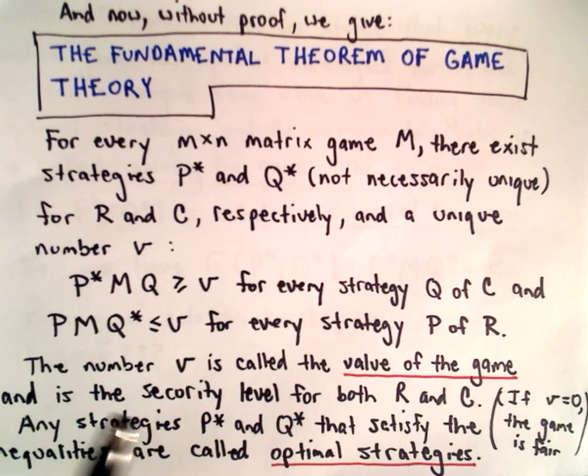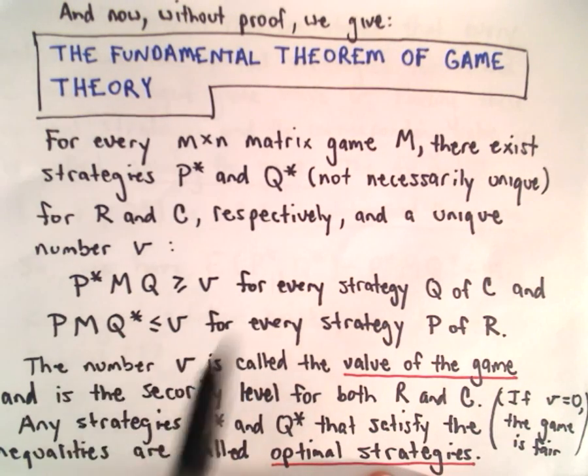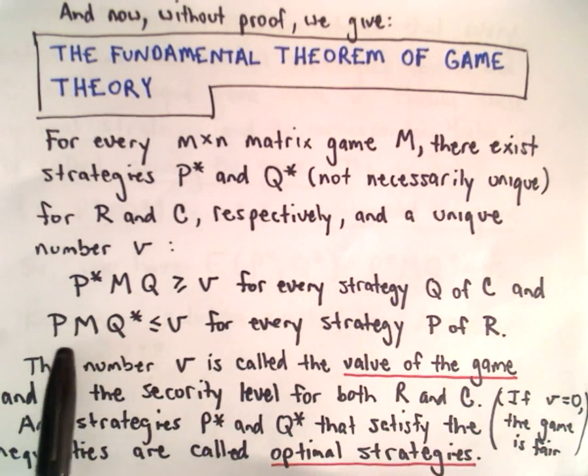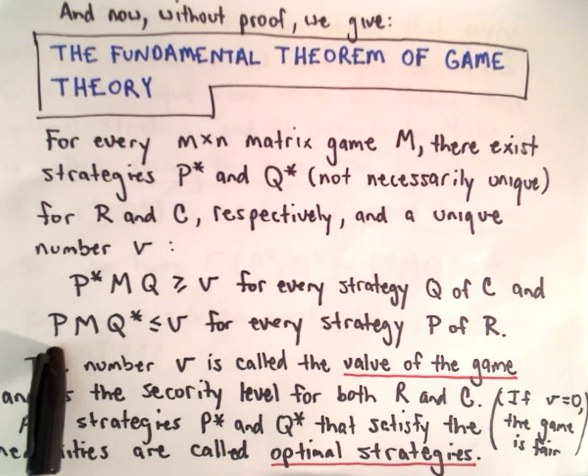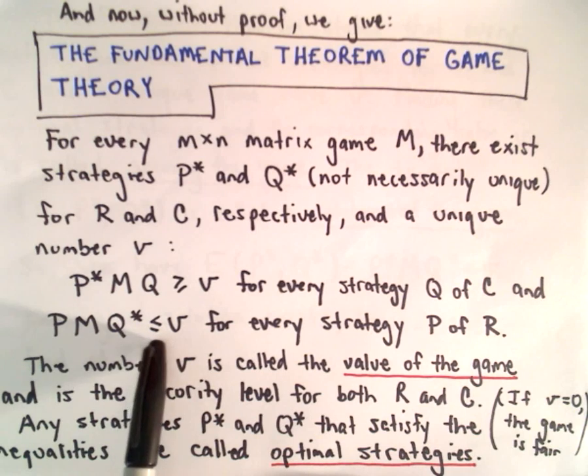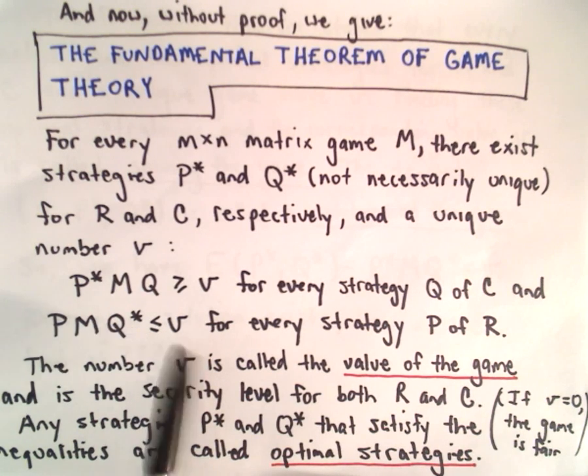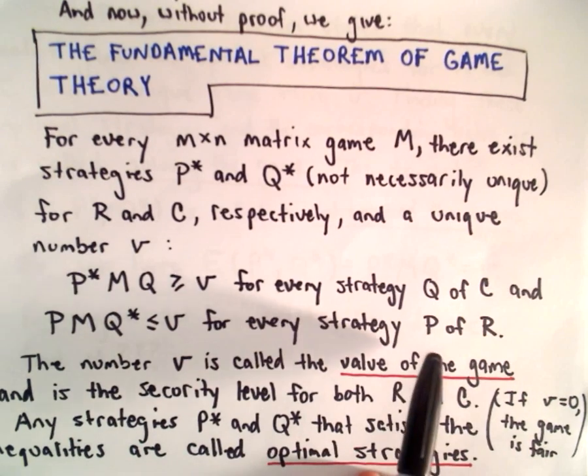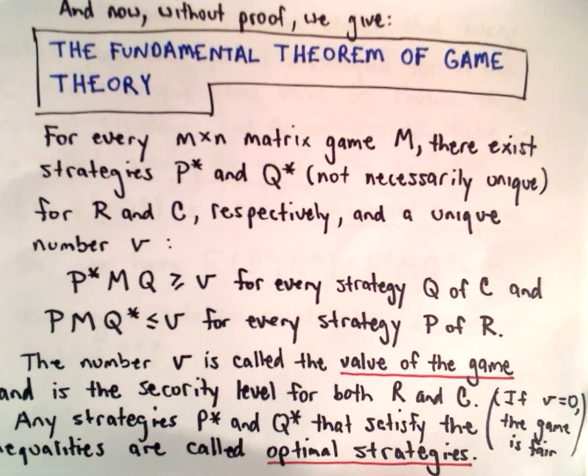But likewise, it says that there's a strategy for the column player, Q*, and it satisfies the second inequality. It says if we take P times M times Q*, that's always less than or equal to V, for any strategy, it doesn't matter what strategy that the row player uses.